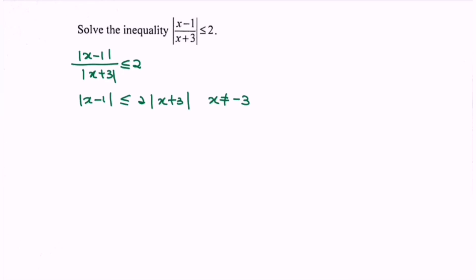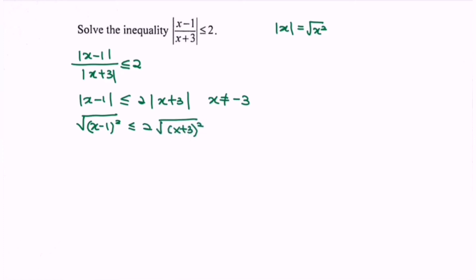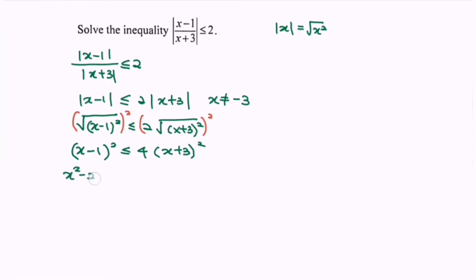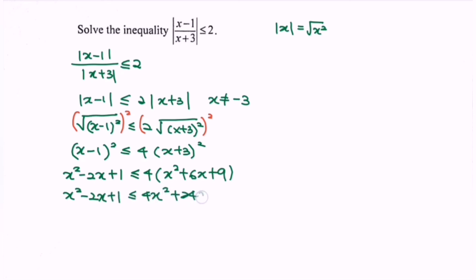Based on the definition for absolute value, where modulus of x equals the square root of x squared, we have the square root of x minus 1 bracket squared, less than or equals to 2 multiplied with the square root of x plus 3 bracket squared. To eliminate the square root, square both sides. Now we have x minus 1 bracket squared less than or equals to 4 multiplied with x plus 3 bracket squared. Expanding: x squared minus 2x plus 1 less than or equals to 4 times x squared plus 6x plus 9.